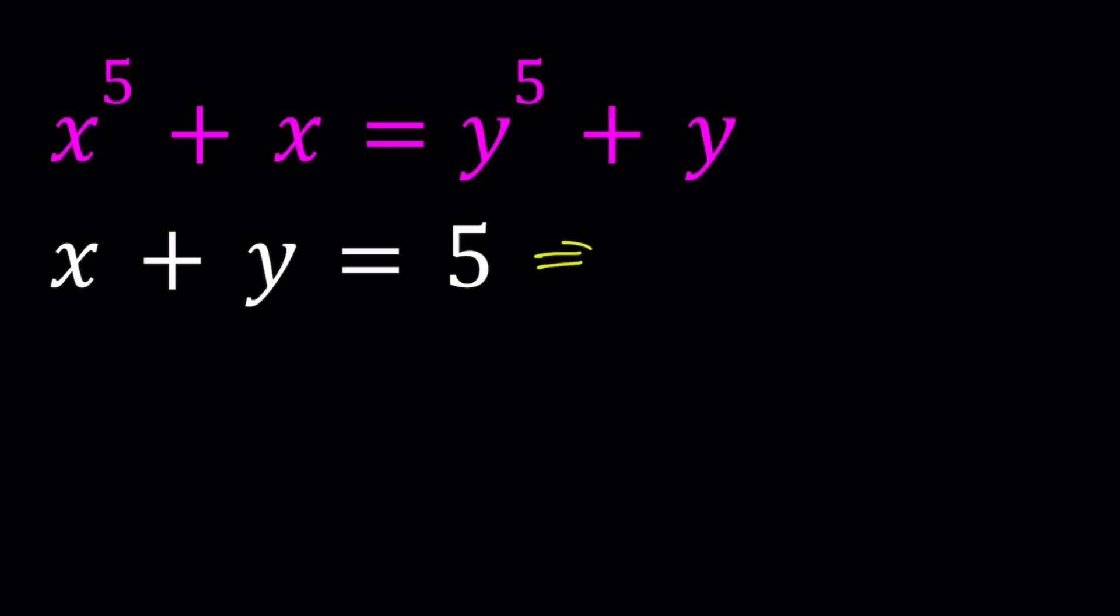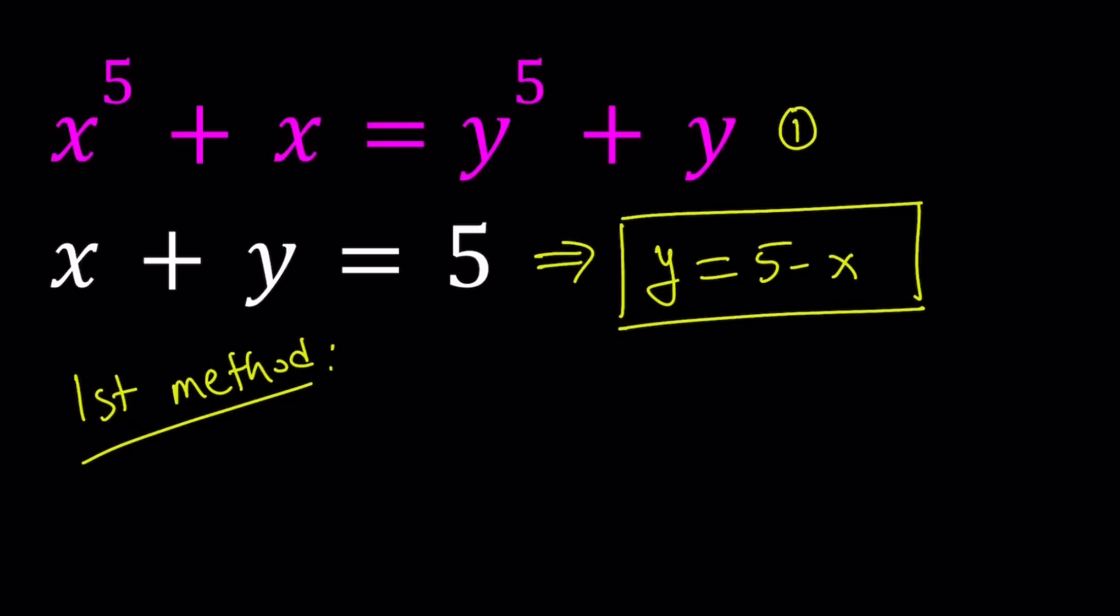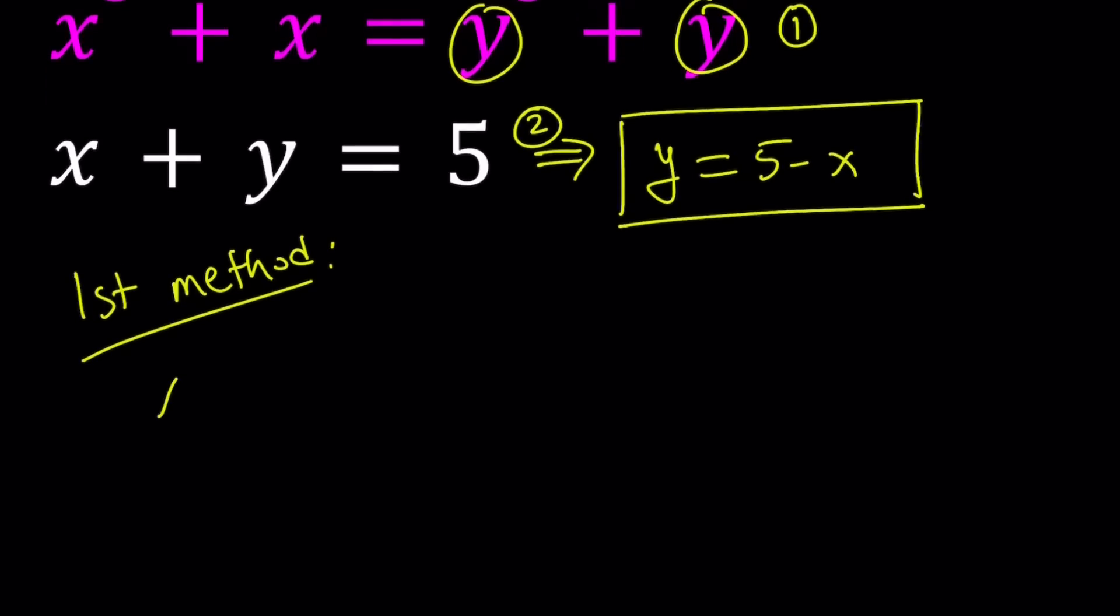From the second equation, I can go ahead and isolate y. I can basically replace y with 5 minus x. So let's go ahead and use that in the first equation, which is the top one. I named this one first, and this one second. So if you replace y with 5 minus x here and here, you get the following: x to the power 5 plus x equals 5 minus x to the power 5 plus 5 minus x.